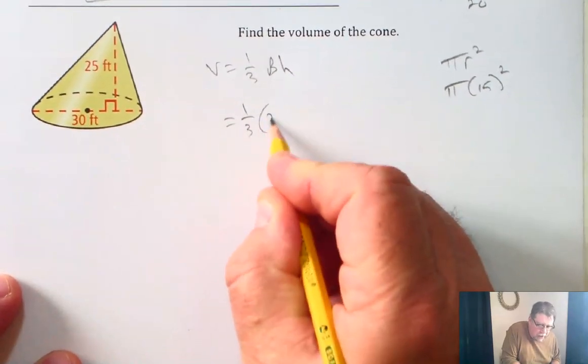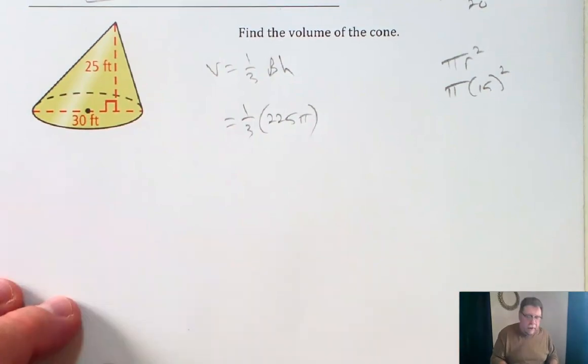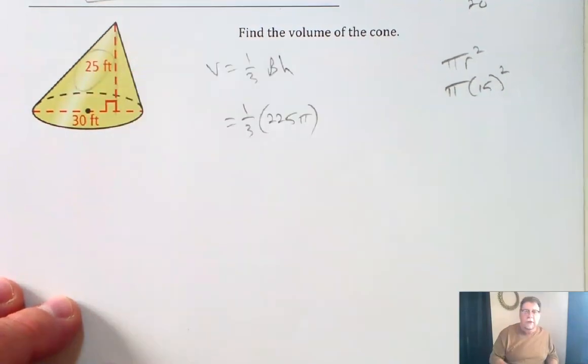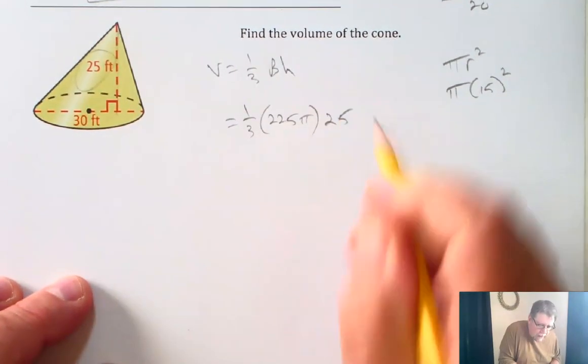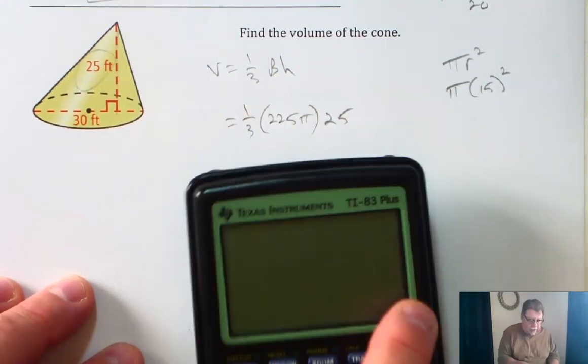So it's one-third times 225 pi times the height, and it's the perpendicular height, and that's exactly what this is. That's perpendicular. I don't need to use the Pythagorean theorem like I did in the last example. 25 is my height, so now I'm pretty much there. I just have to calculate what that is.